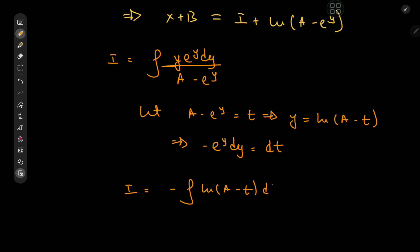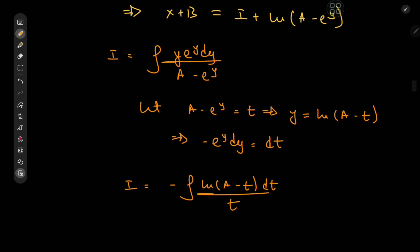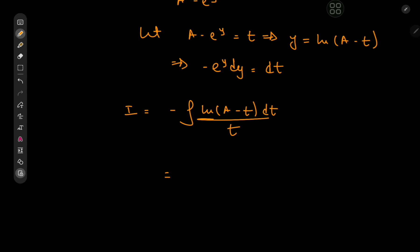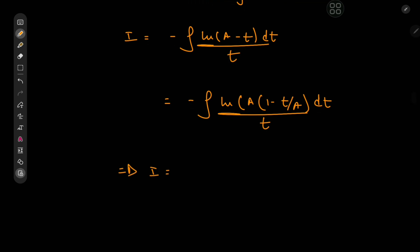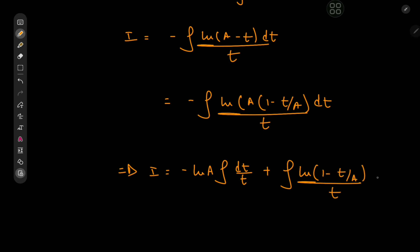The integral I transforms into negative integral of log of a minus t dt divided by t. We can get further by solving for a special case. Factoring out a from the argument of the logarithm, we have the integral of log of a times 1 minus t by a dt divided by t. Using properties of the logarithm and linearity of integration, we get negative log a times the integral of dt by t plus the integral of log of 1 minus t by a divided by t.